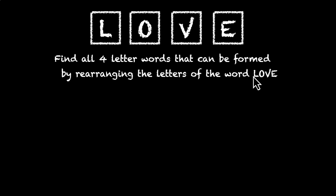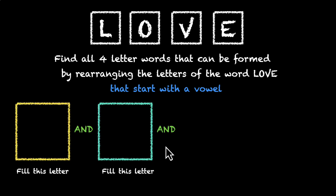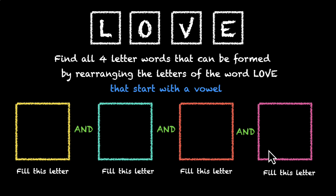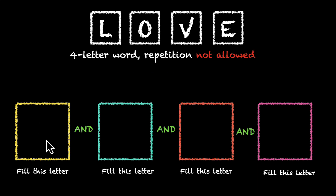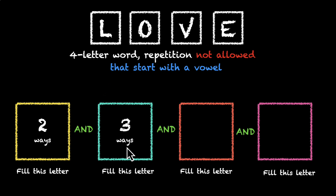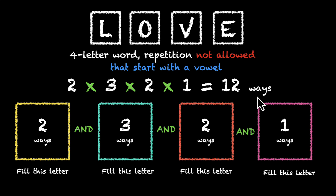L-O-V-E. This time we're making a four-letter word and putting a condition: the word should start with a vowel. We have these four boxes for the four letters. So it has to start with a vowel, which means this yellow box is where the constraint is — we'll take care of this yellow box first. How many vowels do we have? We have two vowels, so this can be done in two ways. Now we're left with three letters, which means we can fill the next box in three ways, the next in two, and the last in one. So two times three times two times one — that's 12 ways. From a total of 24 words, we're down to 12.